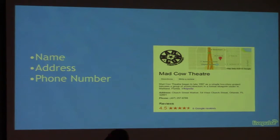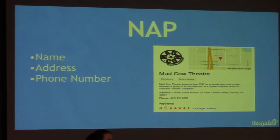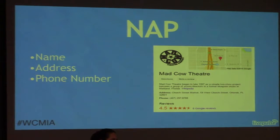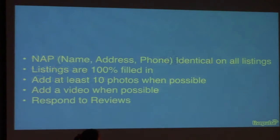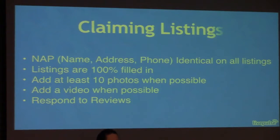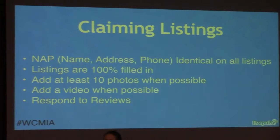The most important part of these listings is the NAP: your Name, Address, and Phone number. Your name, address, and phone number should always be identical on every single listing. When you go to claim these listings, make sure the name, the address, and the phone number are identical across all of them.